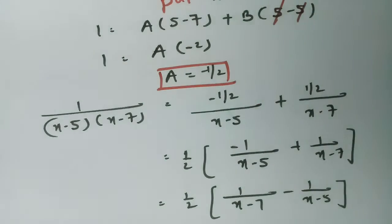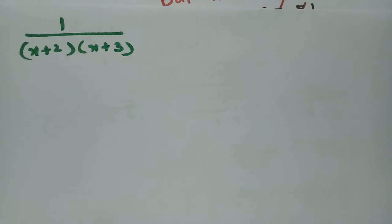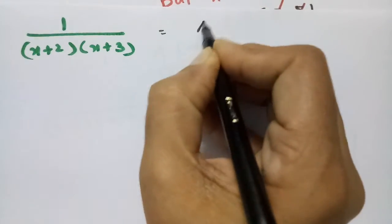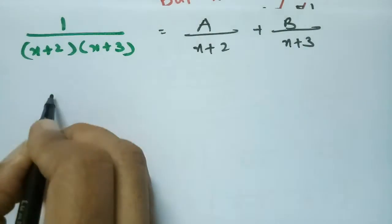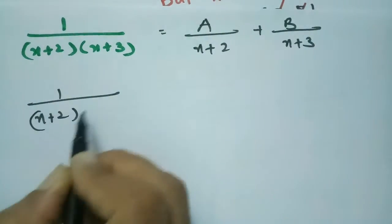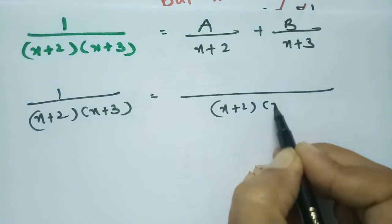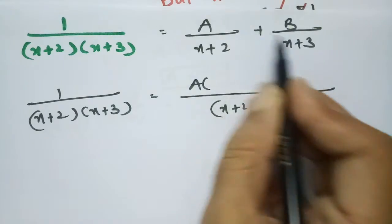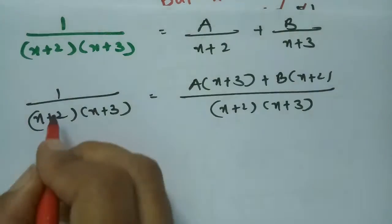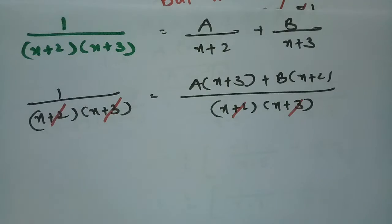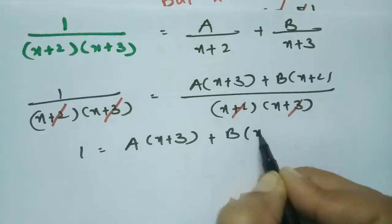This is the process for solving. The next equation is 1 by (x plus 2) into (x plus 3). We write it as A by (x plus 2) plus B by (x plus 3). So, 1 by (x plus 2)(x plus 3) equals — after cross multiplication — A(x plus 3) + B(x plus 2). Cancelling factors on both sides gives equation 1: 1 = A(x plus 3) + B(x plus 2).